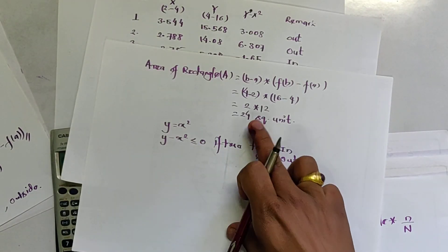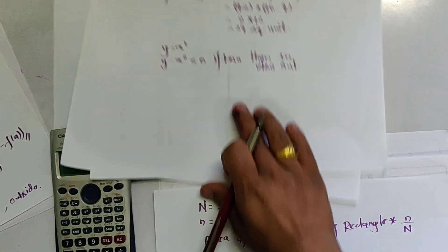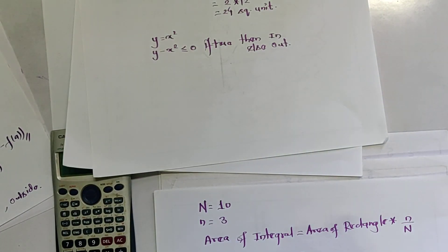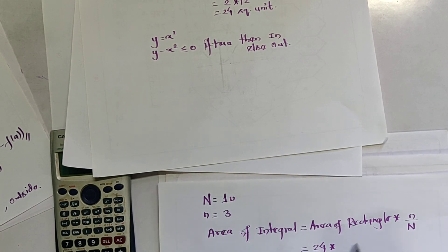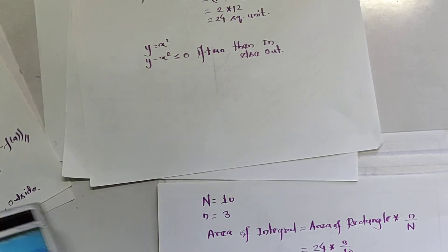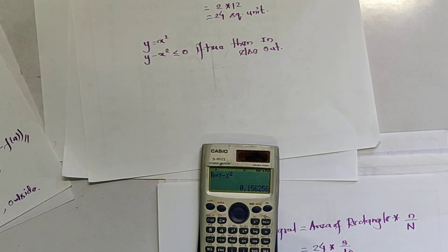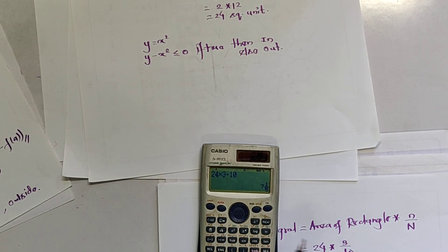The area of the rectangle was 24 square units. So the area of the integral is 24 × 3 / 10 = 7.2 square units.